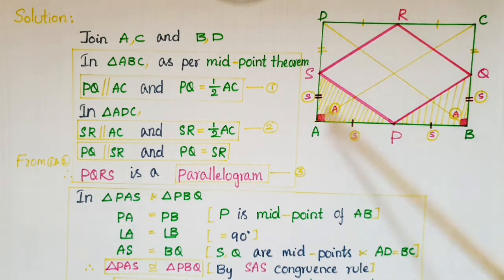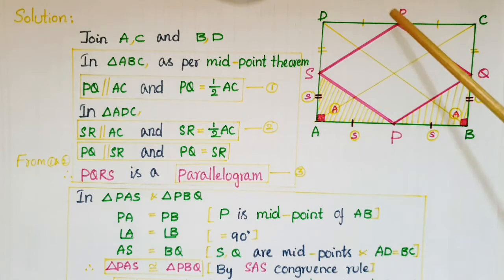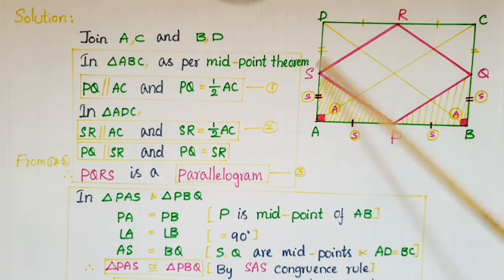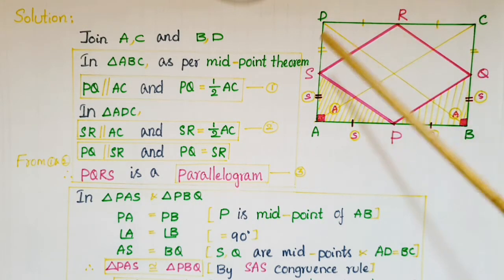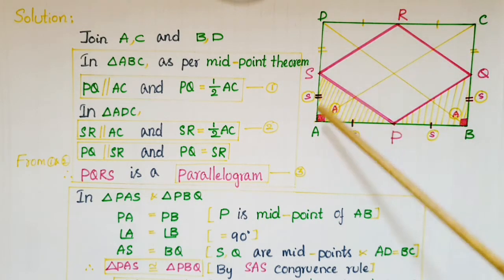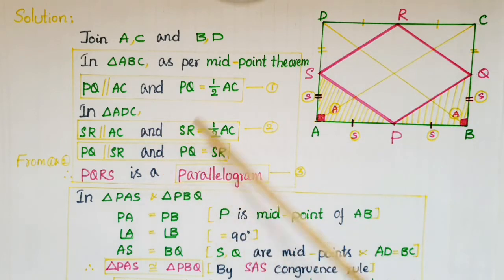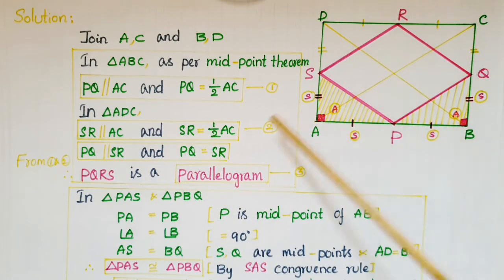Now take triangle ADC. S and R are midpoints of two sides of this triangle. So by the midpoint theorem, SR is parallel to AC and SR is equal to half of AC. This is the second equation.